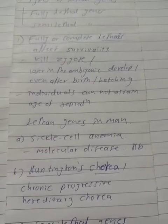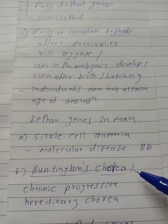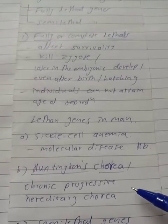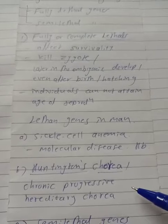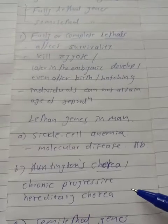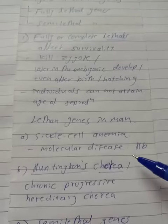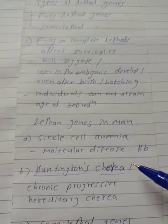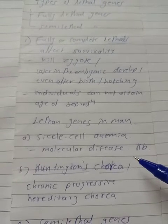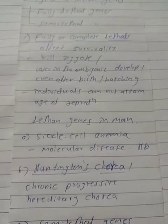The second example is Huntington's chorea. This Huntington's chorea is related with the nervous system. The affected individual, as they age, becomes mentally deteriorated — it affects the nervous system.